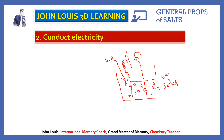Sodium chloride solid will not conduct electricity, but when you add water it gets dissolved. In the dissolved state, the ions carry current from one electrode to the other, the circuit is closed, and the bulb glows. Therefore they conduct electricity either in the molten state or in the aqueous state.